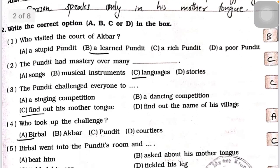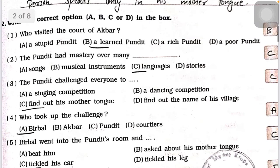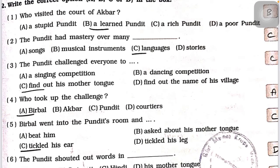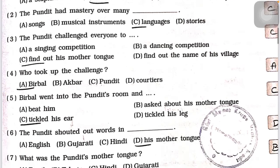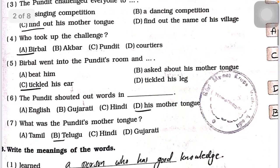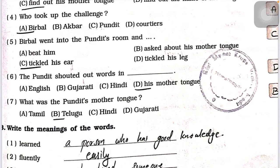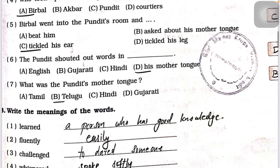Question number 2 — write the correct option. Who visited the court? Option B. The pandit had mastery over many languages — option C. The pandit challenged everyone to find out his mother tongue — option C. Who took up the challenge? Birbal took up the challenge — option A. Birbal went into the pandit's room and tickled his ear — option C. The pandit shouted out words in his mother tongue. What was the pandit's mother tongue? That is Telugu — option B.